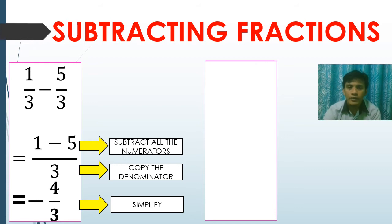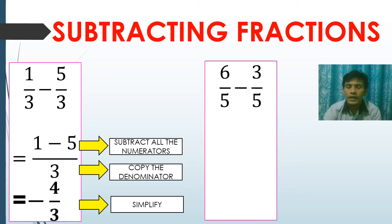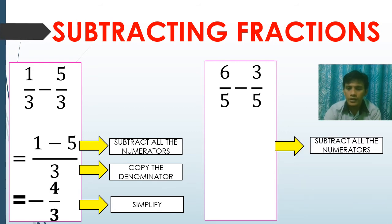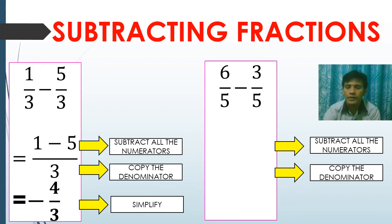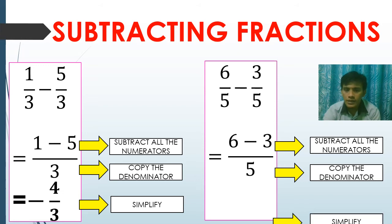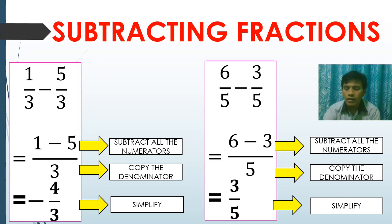Another example: six over five minus three over five. The given problem has similar denominators, which is five. First step: subtract all the numerators. Second step: copy the denominator which is five. Six minus three over five — simplify six minus three and that is equal to three over five. Three over five is already in simplest form and that will be our final answer.